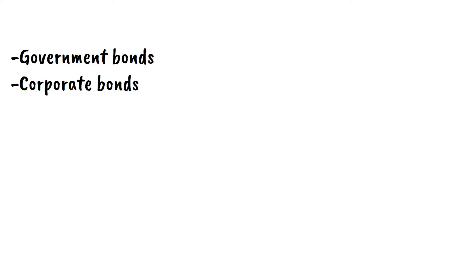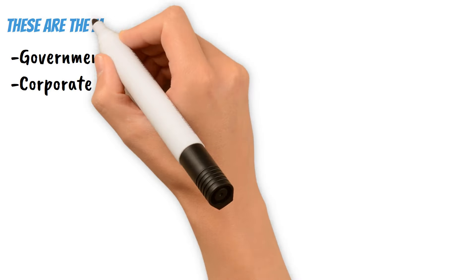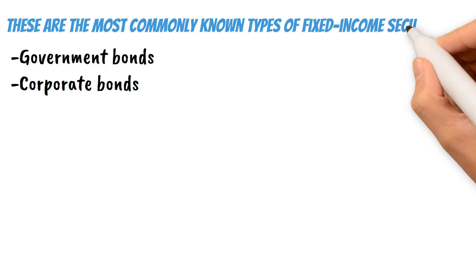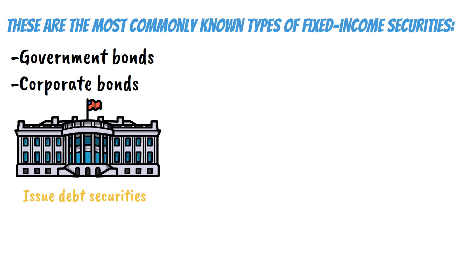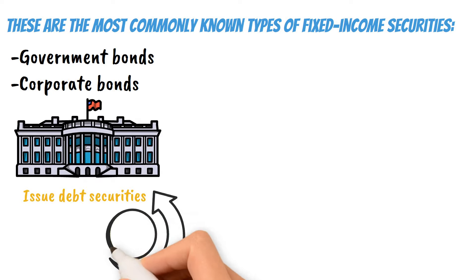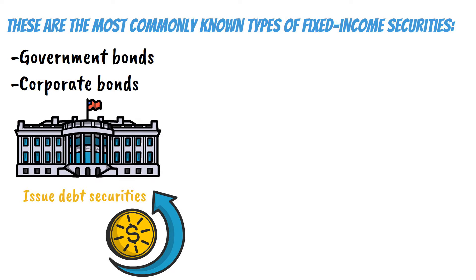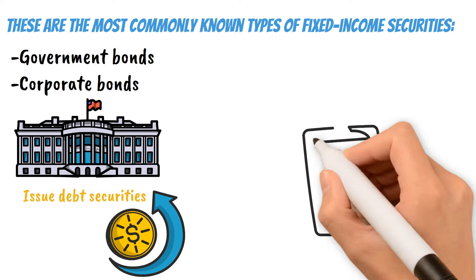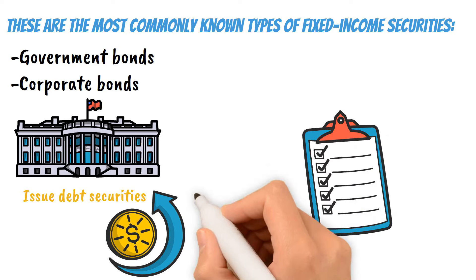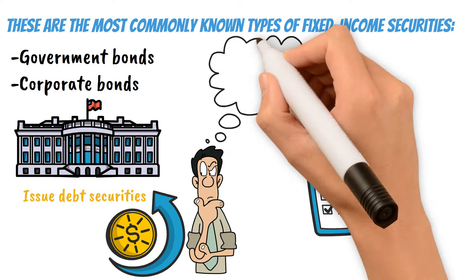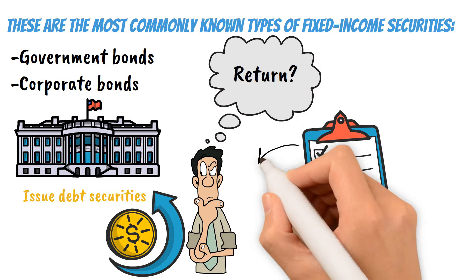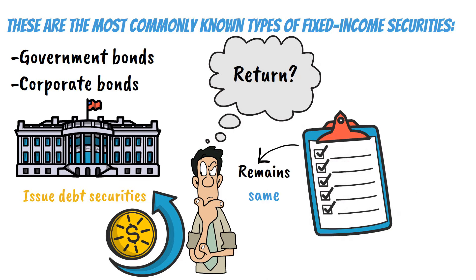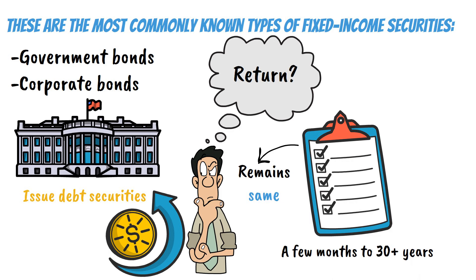You may have heard of corporate and government bonds, and these are the most commonly known types of fixed income securities. Governments and companies will typically issue debt securities to raise money to fund their day-to-day operations and finance their larger projects. These bonds will have a listed rate that you can use to calculate the return you will receive on the invested principal. This rate remains the same throughout the life of the bond, which can range from just a few months to 30 plus years.